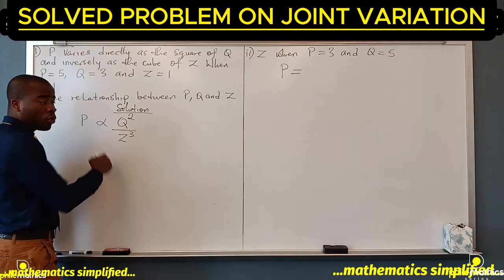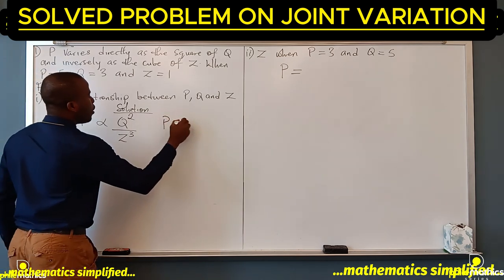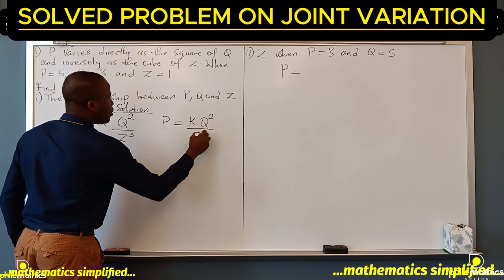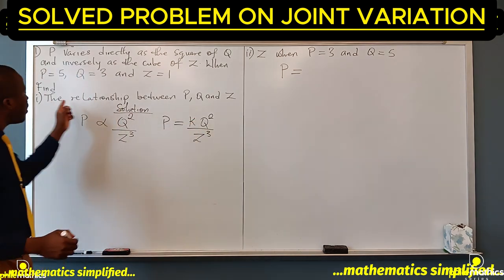If we introduce the constant of proportionality, it will be p equals k q squared over z cubed. Now we are going to look for what k is so that we can find the relationship between p, q, and z.